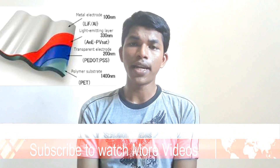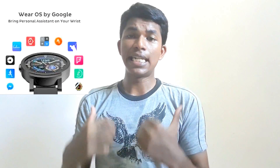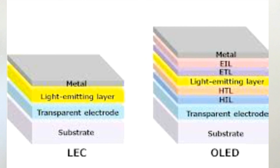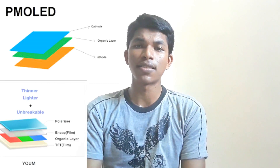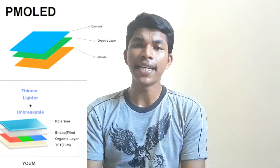OLEDs are used to create digital displays in devices such as television screens, computer monitors, portable systems such as mobile phones, handheld game consoles, and personal digital assistants. There are two main families of OLED: those based on small molecules and those employing polymers. Adding mobile ions to an OLED creates a light emitting electrochemical cell (LEC), which has a slightly different mode of operation. An OLED display can be driven with passive matrix (PMOLED) or active matrix (AMOLED) control schemes.